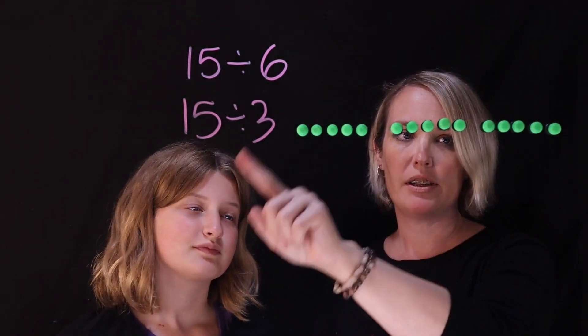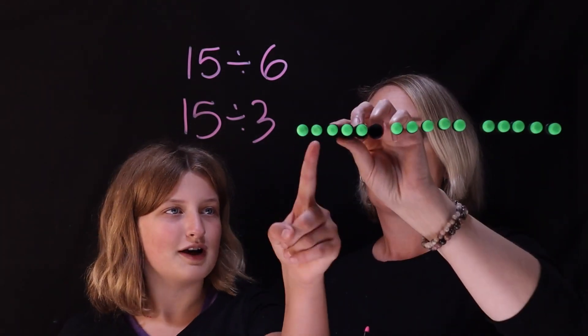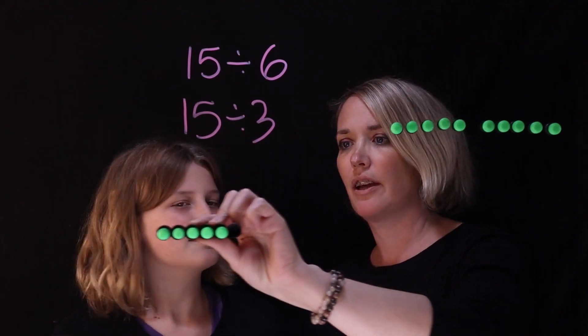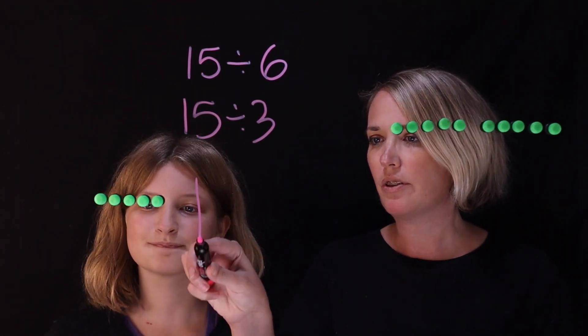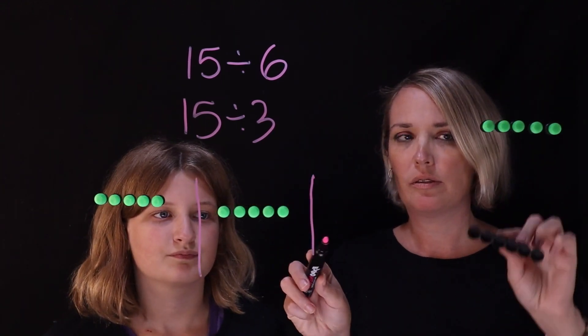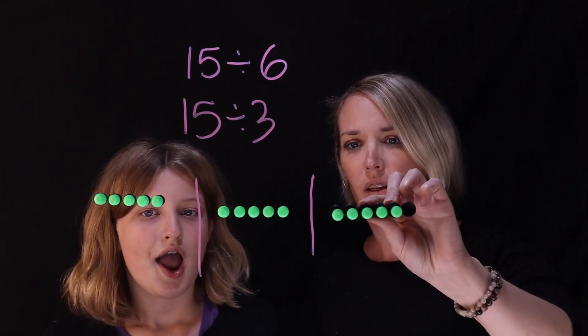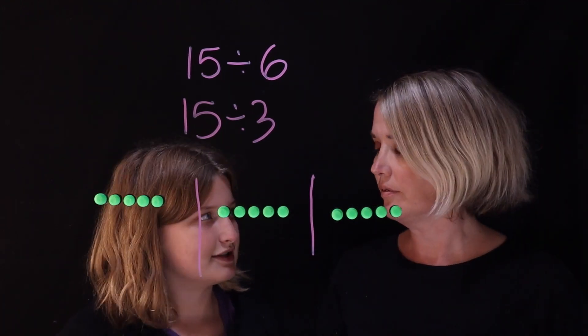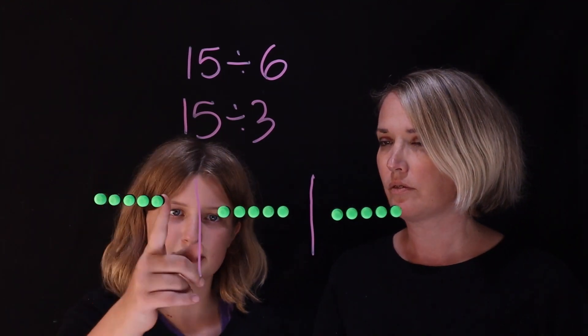So I have 15 here. And then here's 1, 2, 3 equal groups. Okay, so let's say that this is one of the equal groups, 2. And now what I'm going to do to get 6 equal groups is I'm going to split these all into 2.